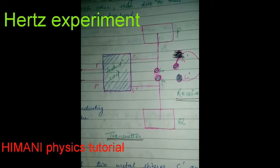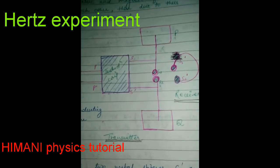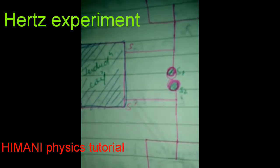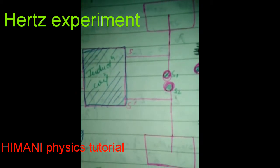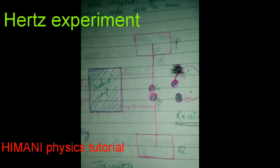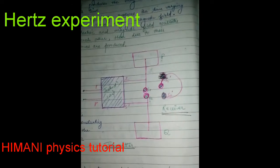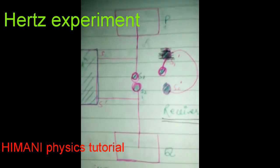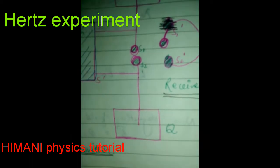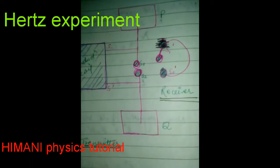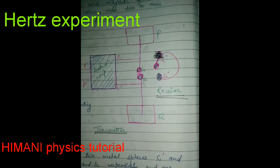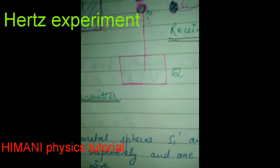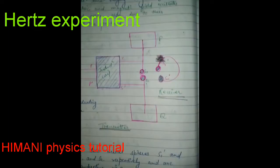The secondary coil of the induction coil is connected via conducting wires which connect the metal spheres S1 and S2. These metal spheres S1 and S2 are connected to metallic plates P and Q.